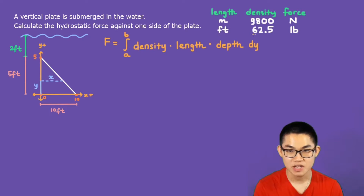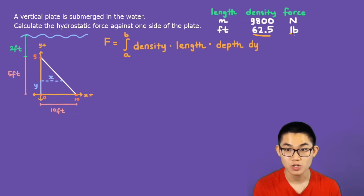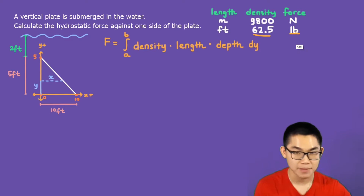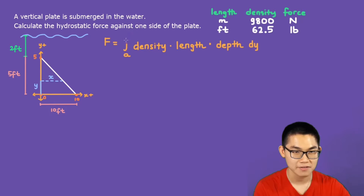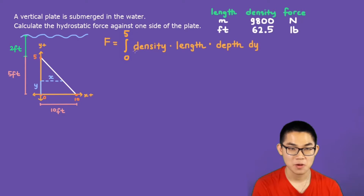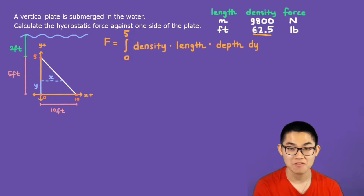Since the problem is in feet, the density will be 62.5 and the force will be in pounds. For the limits, a is the base of the triangle at zero, and b is the top at 5. So a is 0 and b is 5, and the density is 62.5.